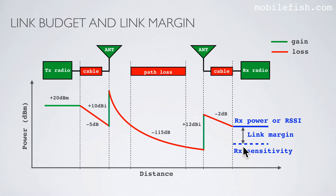The receiver sensitivity is the lowest power level at which the receiver can receive or demodulate the signal. For example, the receiver sensitivity is minus 90 dBm.